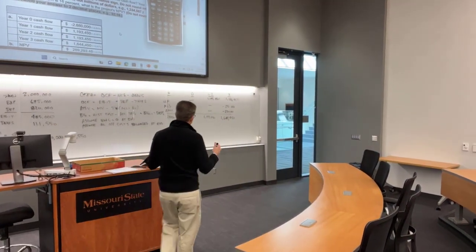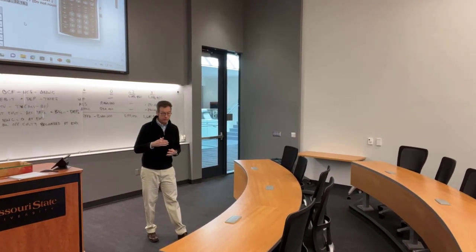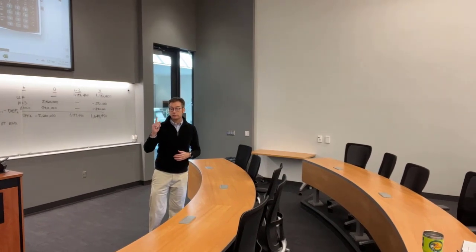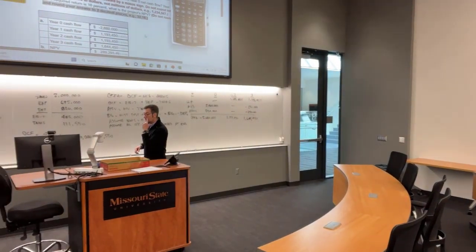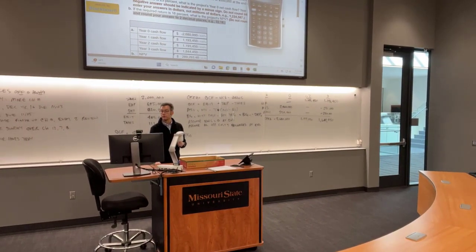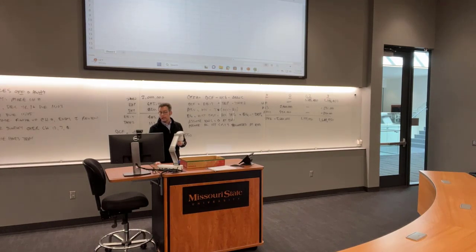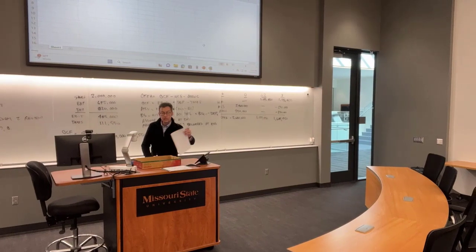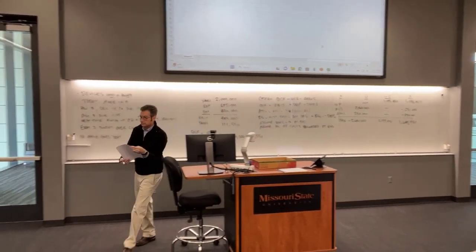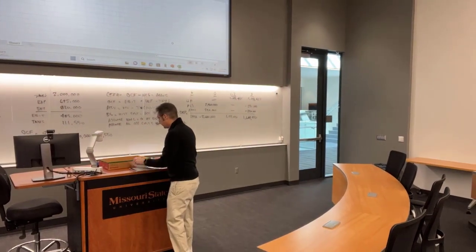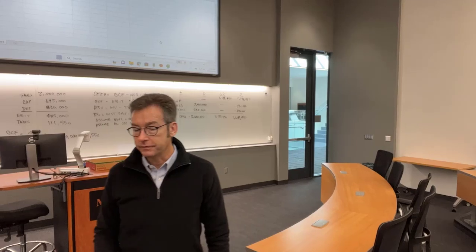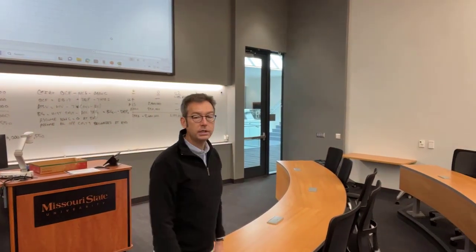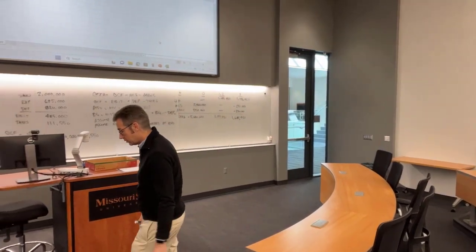Today we're going to be walking through the Baldwin Company example. Here's what we're going to do: we're going to read through here and as we see things to include in the project, we'll put them into the Excel spreadsheet. For a good Excel spreadsheet, put all of your inputs in the upper left-hand corner, then refer back to them down below by linking to them. That's why Excel is called a what-if machine — if I change one input, everything updates.